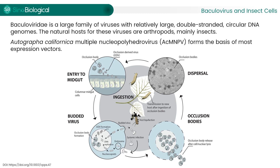Budded virus production begins between 6 and 24 hours, causing a systemic infection of the host. During the very late phase, nuclear capsids are retained in the nucleus, and the ODVs are embedded within a crystalline matrix of polyhedrin to form occlusion bodies, which will be released after cell lysis. The occlusion bodies persist stably in the environment, waiting for the next susceptible host.